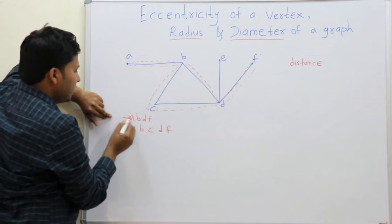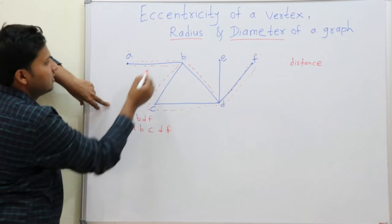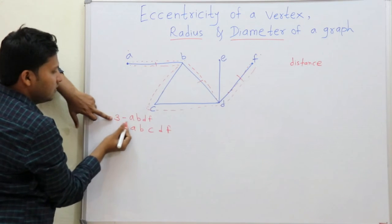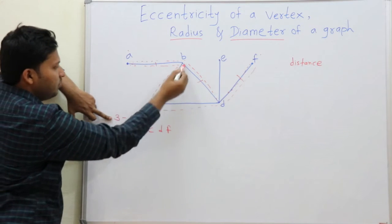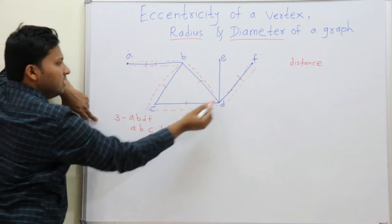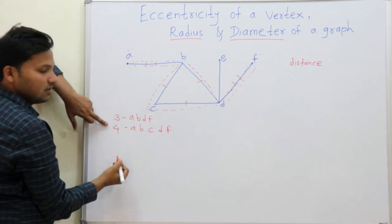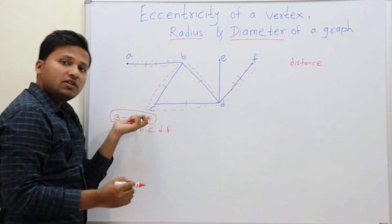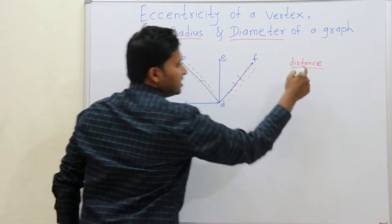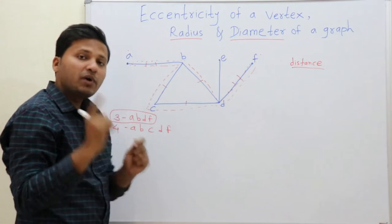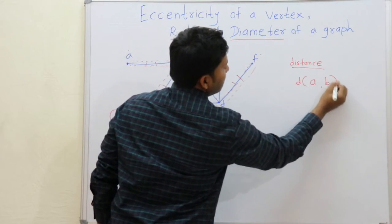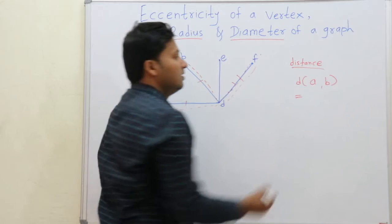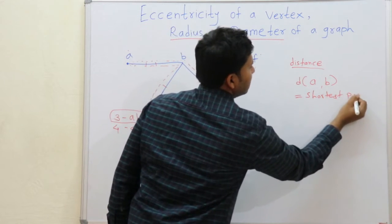For path A-B-D-F, the distance is 1, 2, 3 — so the distance is 3. For the other path A-B-C-D-F, the distance is 4. So we opt for distance 3 because this is the shortest path. Distance means the shortest path distance.